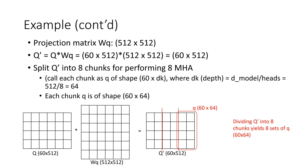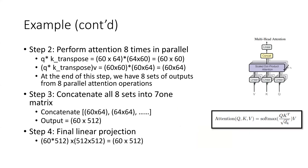We have done the linear projection to a lower dimension dk, which in this case is 64. Next, we need to do the scaled dot product attention. The formula is the same as studied in the previous video. The only difference is that the big Q, K, and V are not the original matrices but have been linearly projected to a lower dimension. What we feed to the softmax function are the linearly projected versions — the small Q shown in the previous slide. The dimension of Q is 60 by 64.